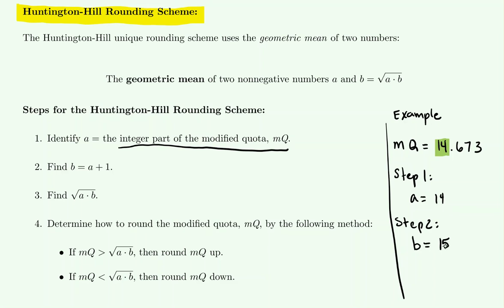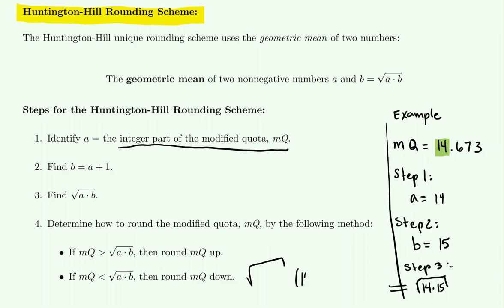B is just A plus one, so 14 plus one is 15. Step three tells us to find the square root of A times B — that's the square root of 14 times 15. If you're typing this into your calculator, press the square root button, then parentheses, 14 times 15, close parentheses, and enter. That gives you the square root of 14 times 15.